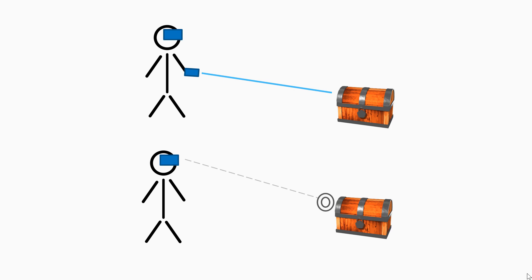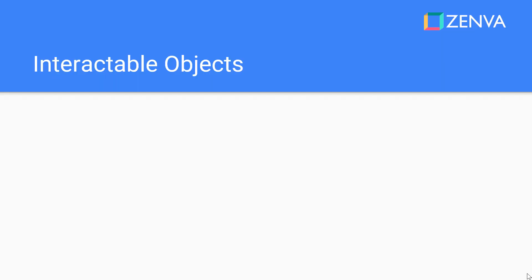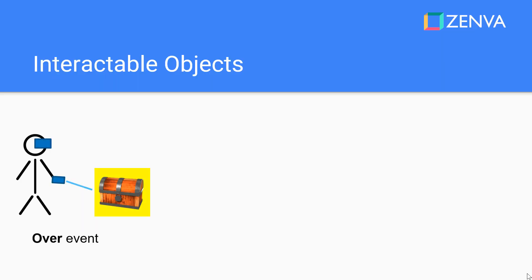Let's think of the events that such an object would need to have. First of all, when you hover your cursor, your reticle, or your laser pointer over that object, you can have an over event. That's when you can highlight your interactable object — you can maybe change its size or have some kind of animation, which points out to the user that the object is now ready to be interacted with.